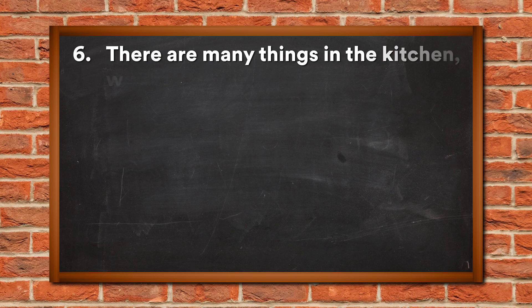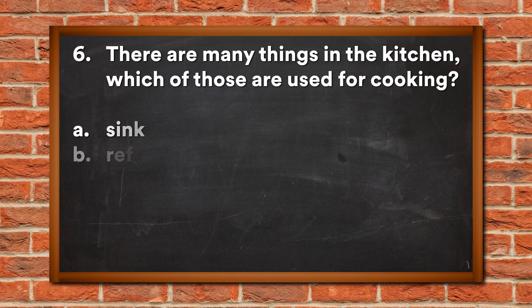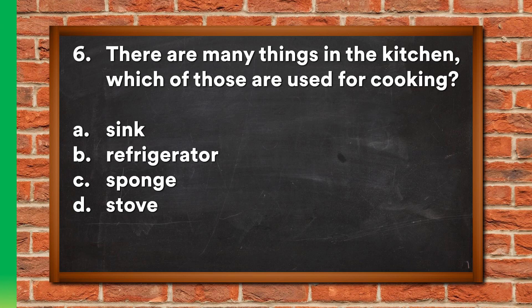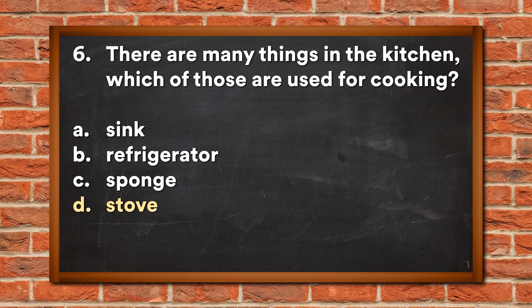Question 6: There are many things in the kitchen, which of those are used for cooking? A. Sink, B. Refrigerator, C. Sponge, D. Stove. The answer is D, Stove.